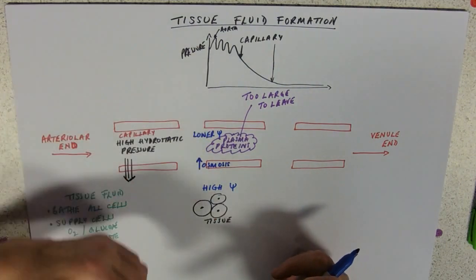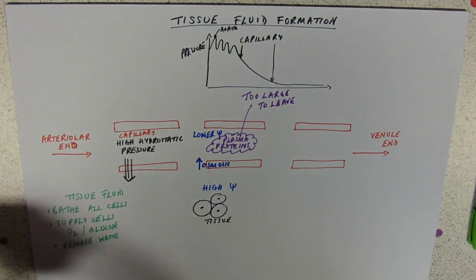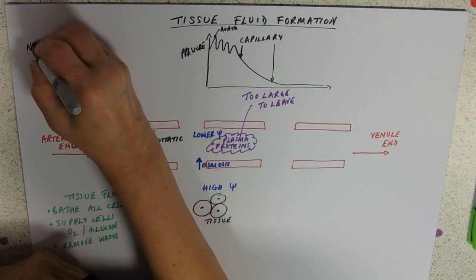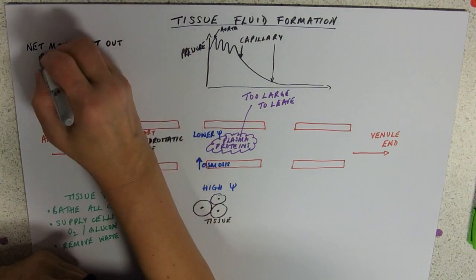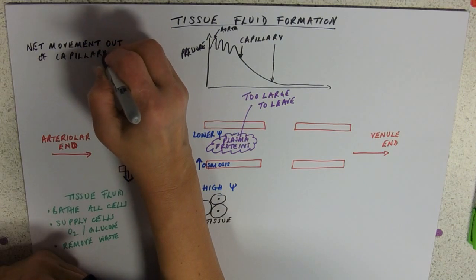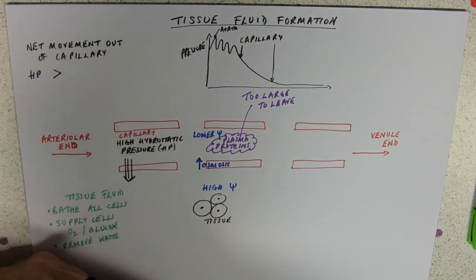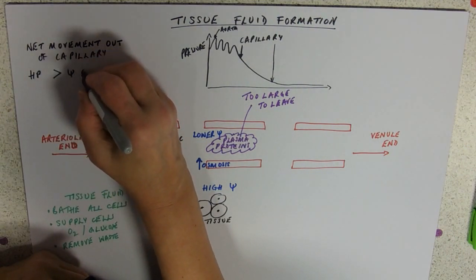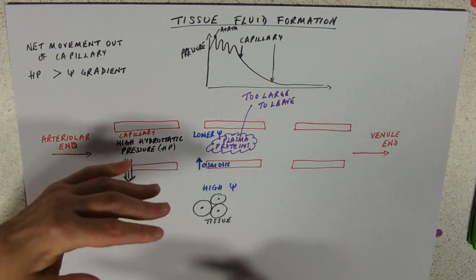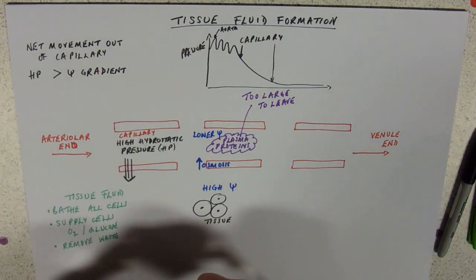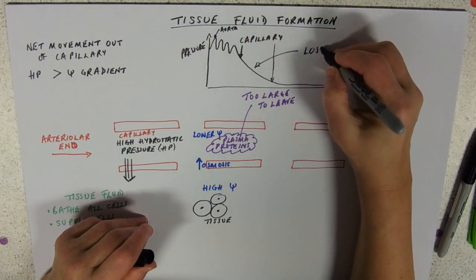Going from high water potential to a lower water potential. But at this end, at the arteriolar end, overall, the net movement is out of the capillary. Why is that? Because the hydrostatic pressure is much bigger than the water potential gradient. We're losing fluid, losing fluid, losing fluid, and that loss of fluid will make the hydrostatic pressure go down.